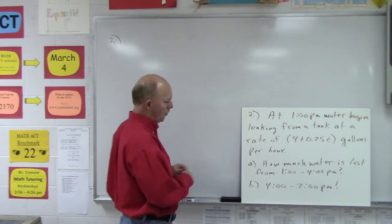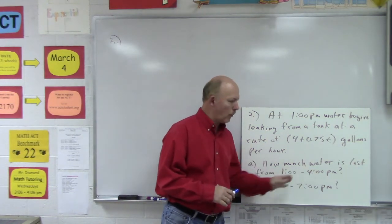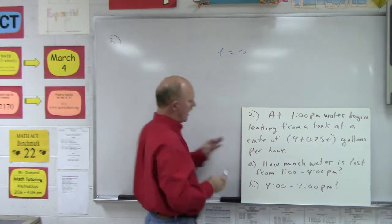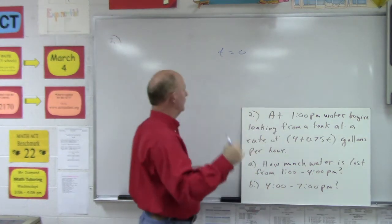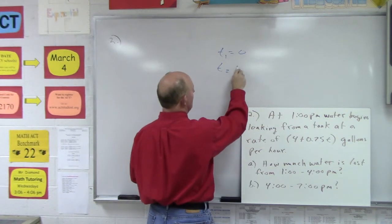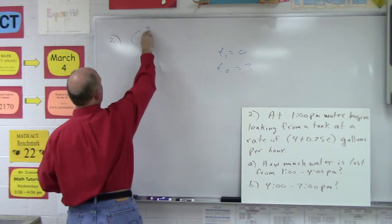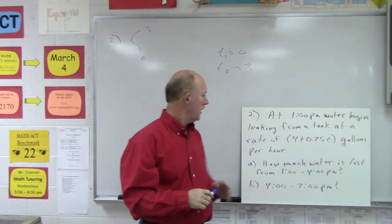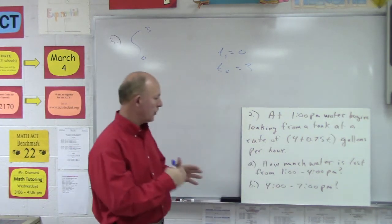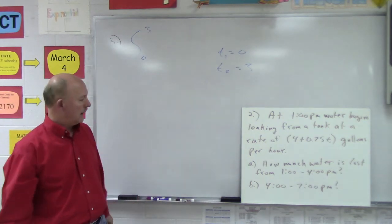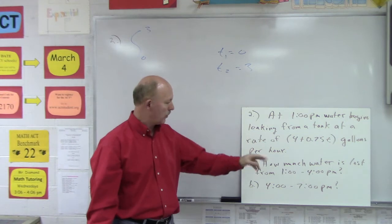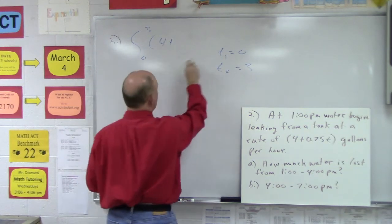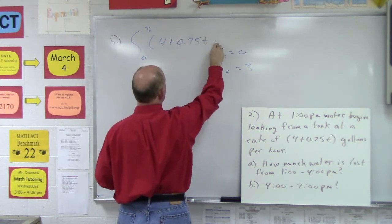Looking at our time values: it starts leaking at 1 p.m. and we want to know how much leaked from 1 to 4 — that's a three-hour period. So T1 equals 0 and T2 equals 3. We set up the integral from 0 to 3 of (4 plus 0.75T) dt. Note: the integral is not from 1 to 4 — those are clock times. Our variable T counts hours elapsed since leaking began.